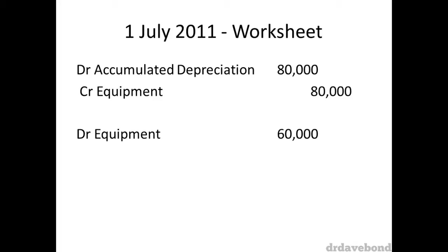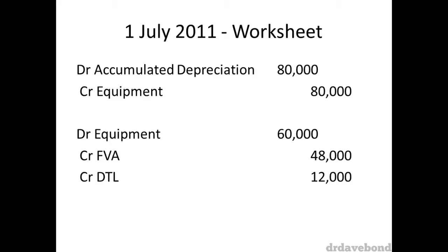We then debit equipment $60,000, which is the amount required to get the equipment from its carrying value of $130,000 to its fair value of $190,000. We then credit fair value adjustment (FVA) $48,000, which is the after-tax amount of the equipment, i.e. 1 minus the tax rate of 30%, so 70% multiplied by $60,000. We also credit deferred tax liability, which reflects the temporary difference caused by the revaluation. Deferred tax effects are covered elsewhere if you're not sure about this.